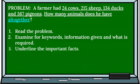We have underlined our keyword 'altogether,' and we also have our facts and what is required. Our facts: the farmer had 24 cows, 215 sheep, 124 ducks, and 367 pigeons. What is required? How many animals does he have? And here's our keyword: 'all together.'